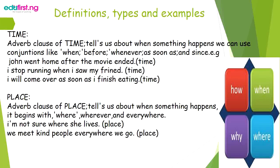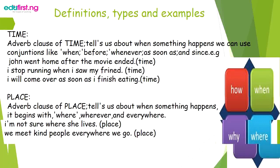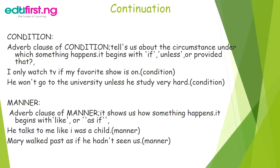Adverb clause of place: tells us about where something happens. It begins with conjunctions like where, wherever, and everywhere. For example: 'I'm not sure where she lives.' 'We meet kind people everywhere we go.'